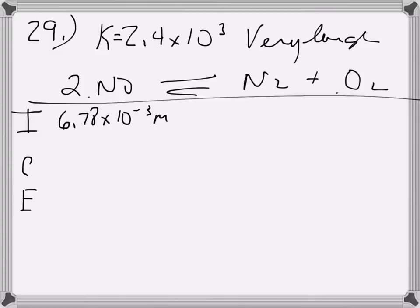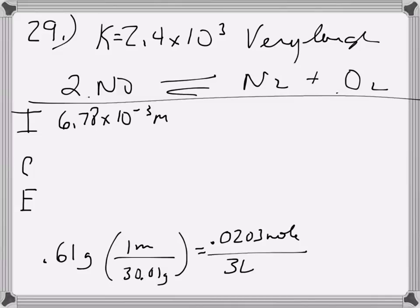Initially, I have 6.78 times 10 to the negative third molarity. I got that by taking the grams that were given and dividing it by the volume. If you quickly go back, you take your 0.61 grams. I know that every time I have 30.01 grams, I have one mole. So that's going to give me my moles. When I did that, I found that there were 0.0203 moles. Now molarity is moles per liter, so I divided it by the 3 liters. You'll get that number.